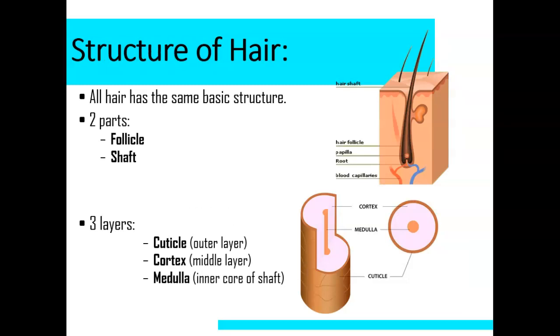Structure of hair. All hair has the same basic structure. There's two parts, the follicle and the shaft. You can see on the right, the follicle is at the bottom. This is what we sometimes think about, it goes into the root of the hair. And then we have three layers: the cuticle, which is the outer layer; the cortex, which is the middle layer; and the medulla, which is the inner core of the shaft. You can see over here, in the picture to the right, the medulla is in the center. The cuticle is on the outside.